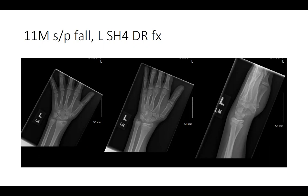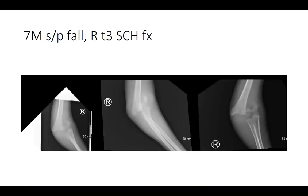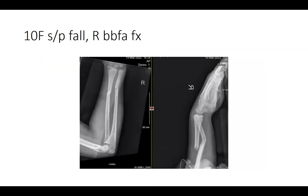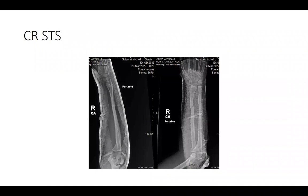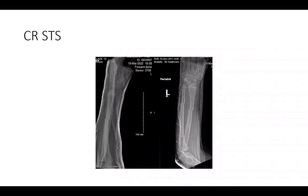Next is an 11-year-old male status post fall with a Salter-Harris 4 distal radius fracture. Gentle reduction and sugar-tong splint. Next is a 70-year-old male status post fall with a right type 3 supracondylar humerus fracture, treated with CRPP. He was neuro-intact, closed, did well post-operatively, and was sent home. Next is a 10-year-old female status post fall with a right both-bone forearm fracture, and a 10-year-old male with a left forearm fracture — both closed reduced and placed into splints.